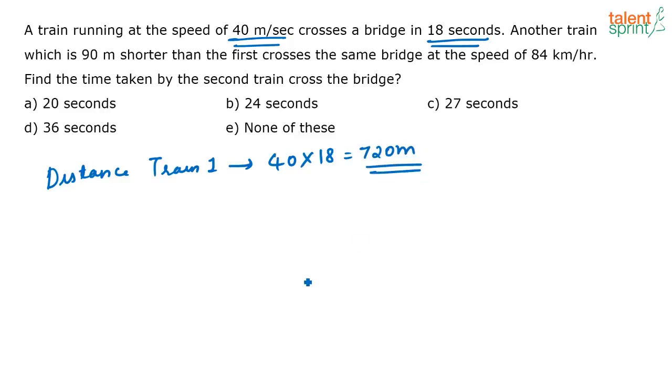Now what does the 720 meter represent? It represents the length of the train, right? This means the length of the train plus the length of the bridge. So this 720 meter represents the length of this train plus the length of the bridge.